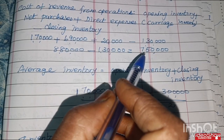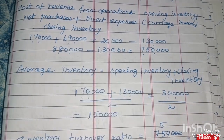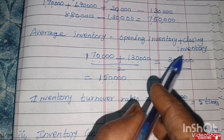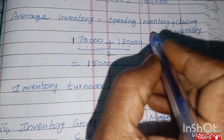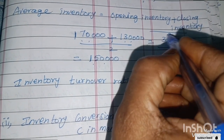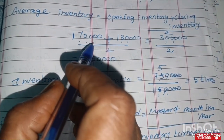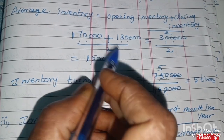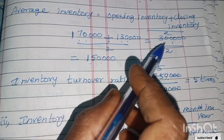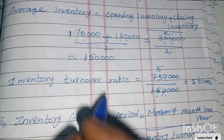This gives us the Cost of Revenue from Operations. Next, Average Inventory equals opening inventory plus closing inventory divided by 2. So, 1,70,000 plus 1,30,000 divided by 2 equals 3,00,000 divided by 2, which gives 1,50,000 as the average inventory.